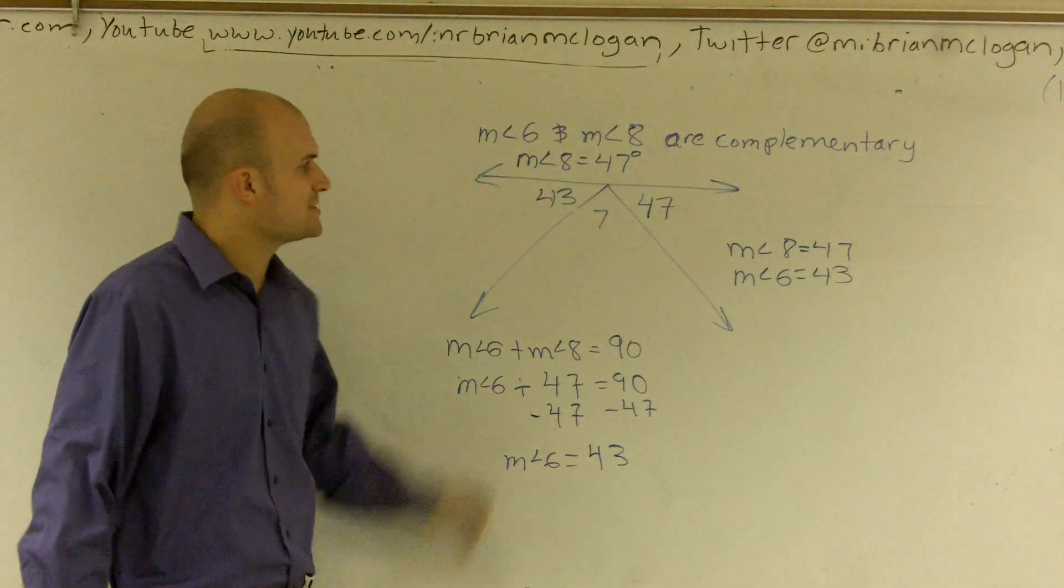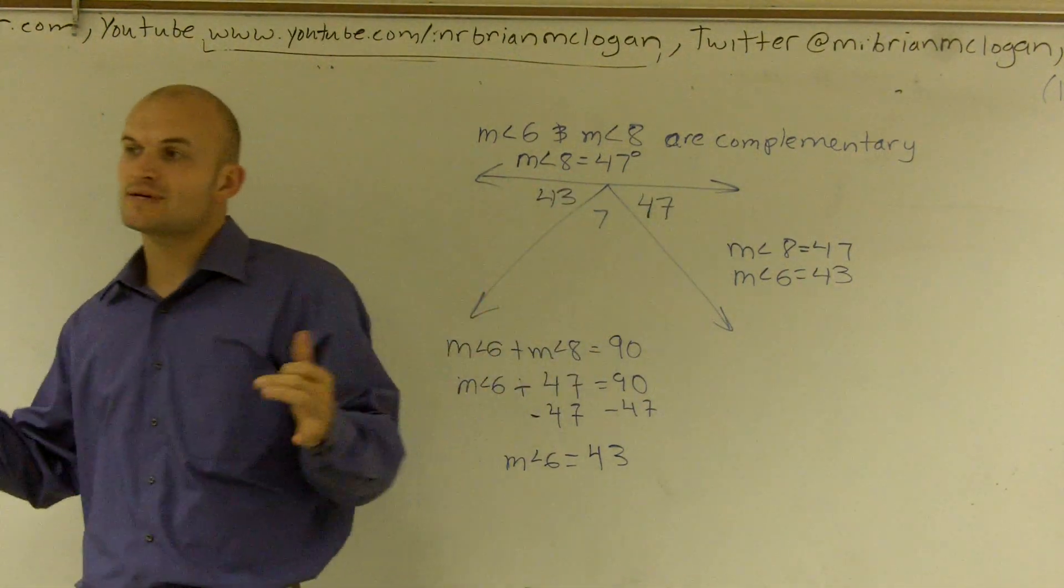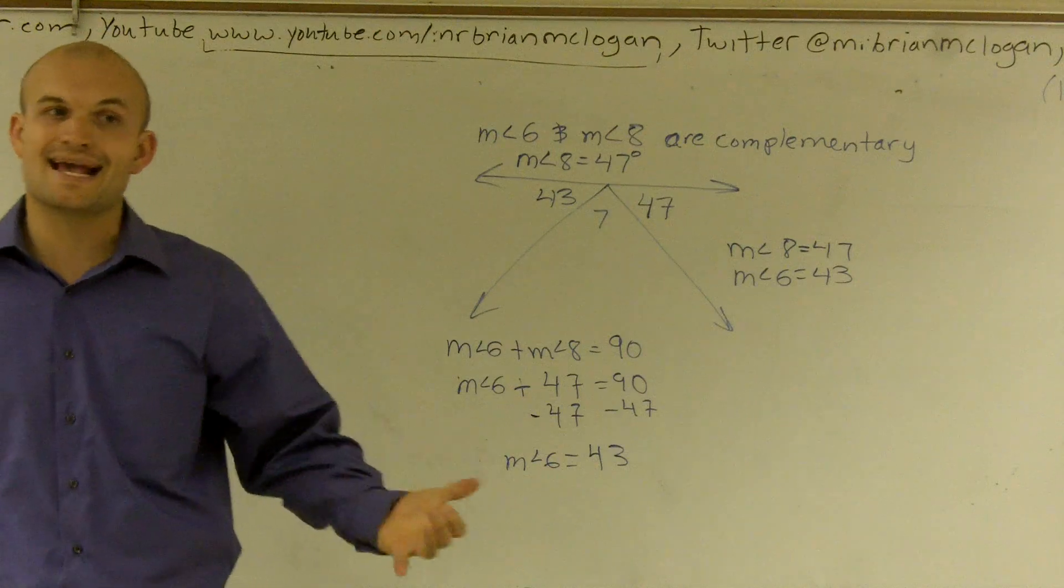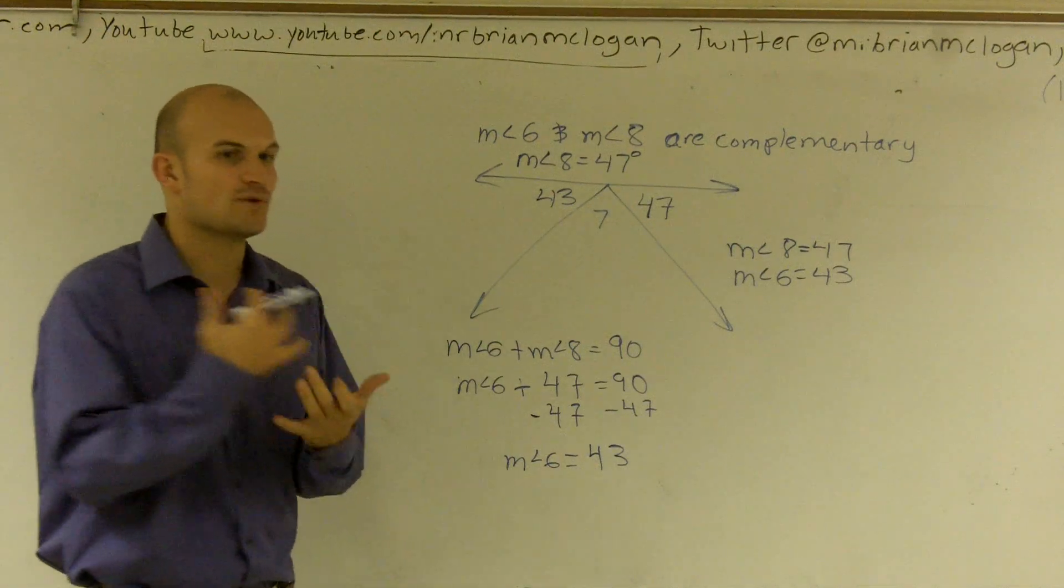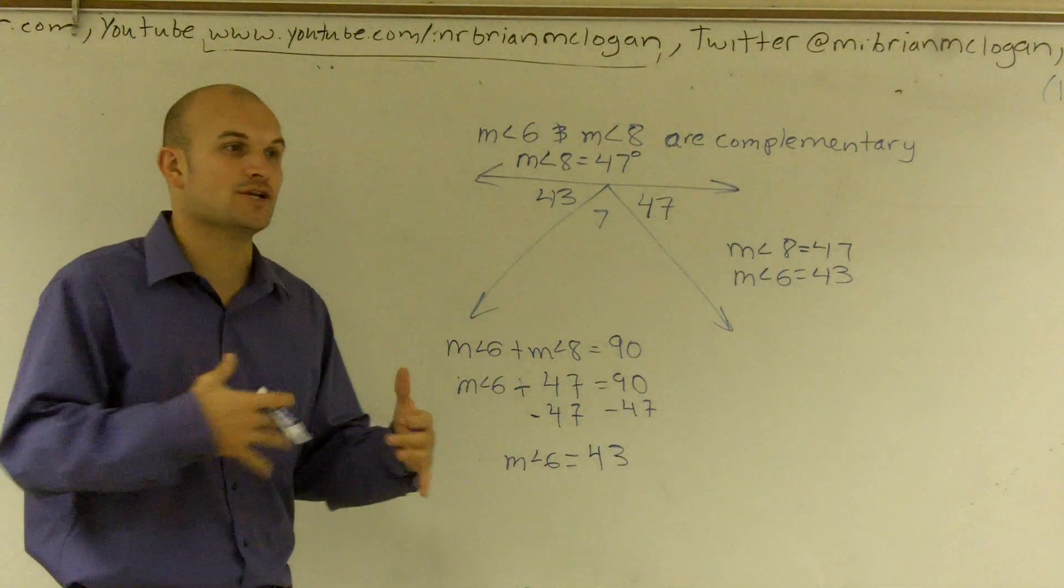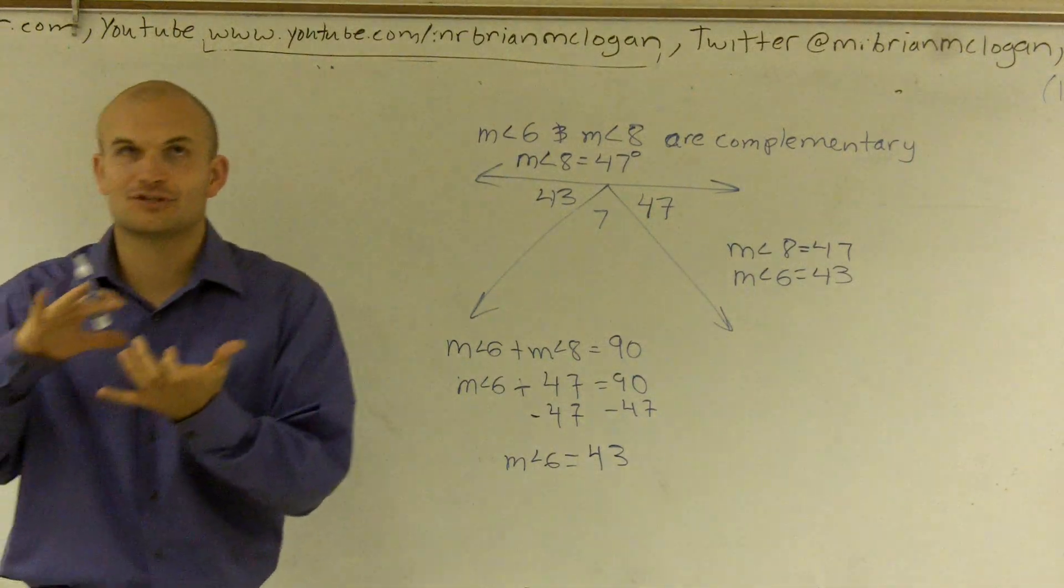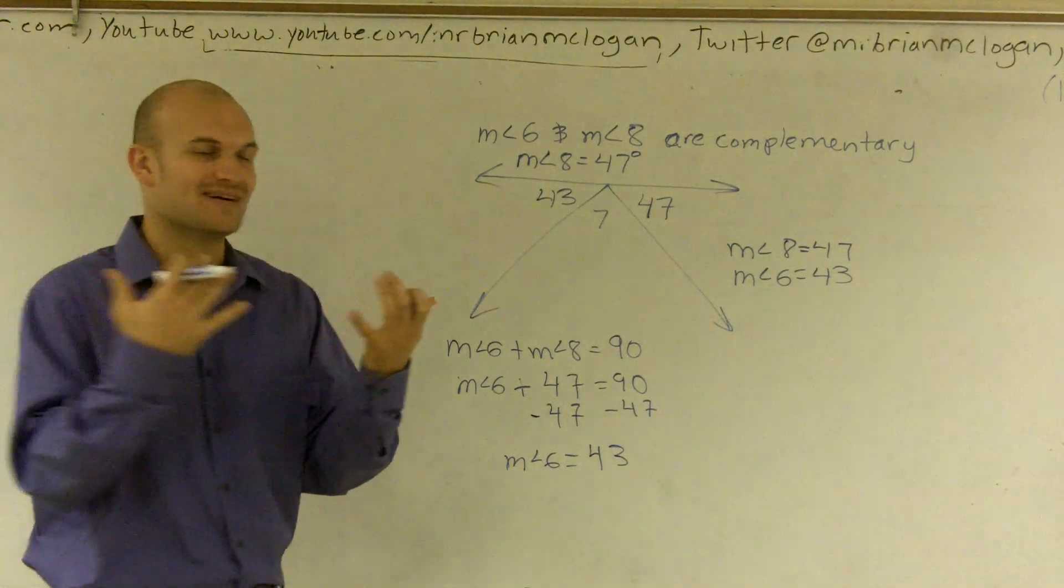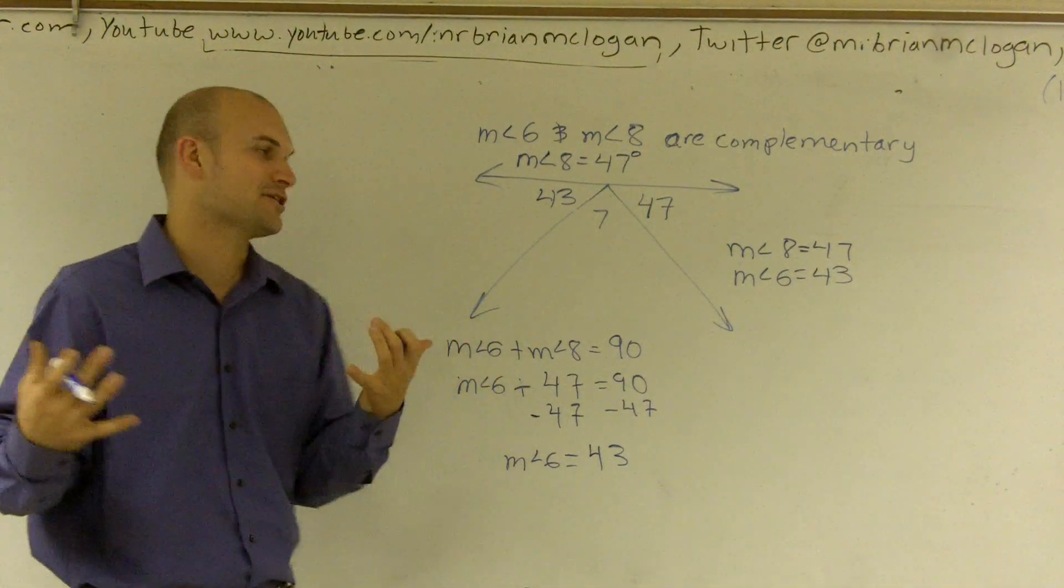there's a really important thing that we see here is we see a straight line. And whenever we see a straight line, we have a straight angle. And what we notice is once we have a straight angle, we know that the measure of a straight angle is 180 degrees.